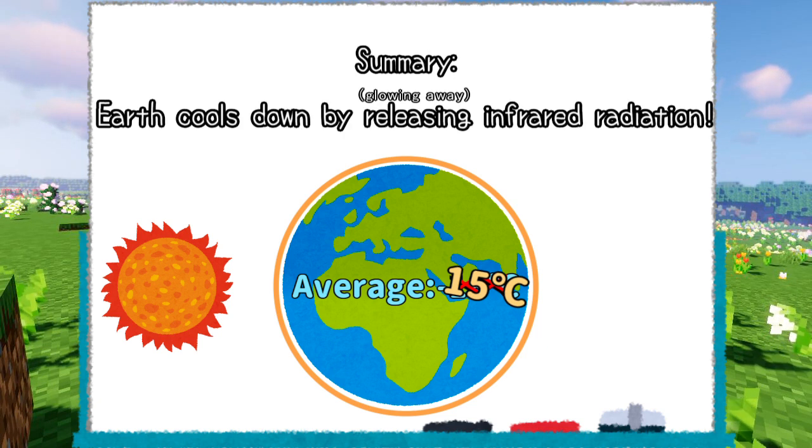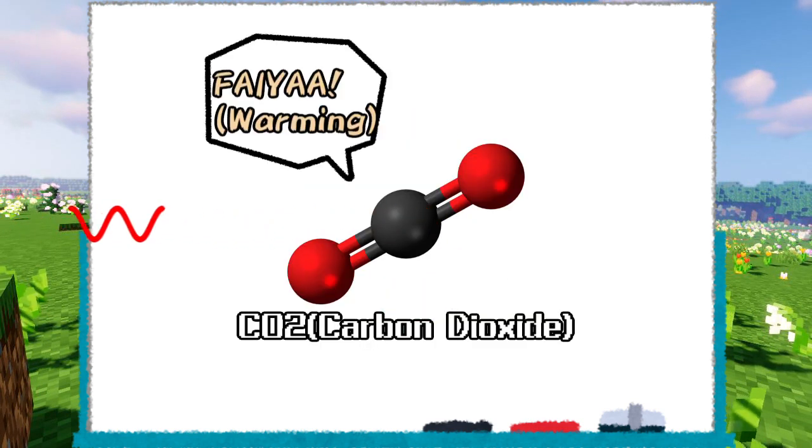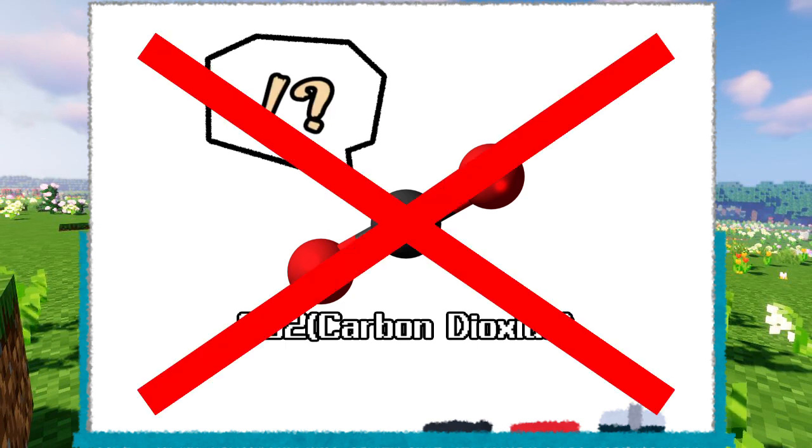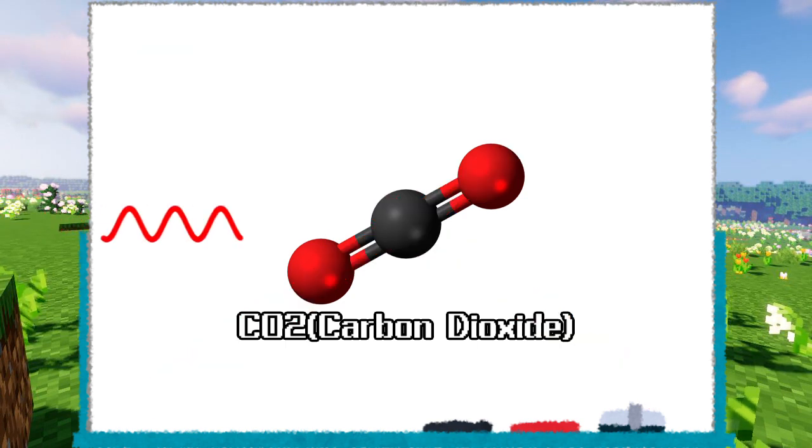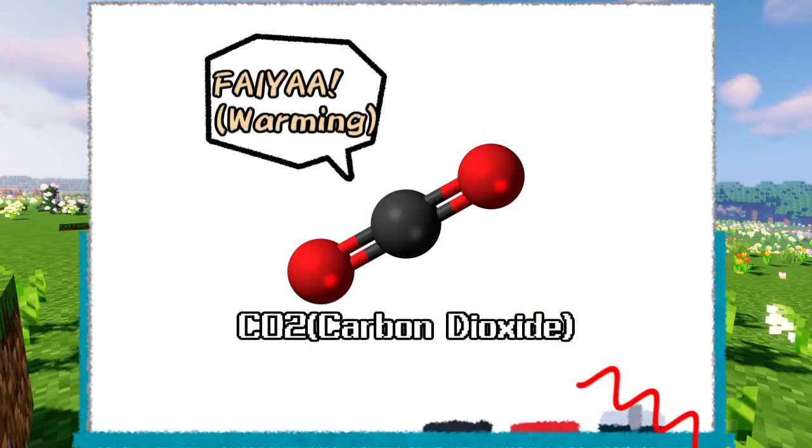That said, we will next move on to the greenhouse effect. Greenhouse gas reflects infrared radiation from Earth and prevents it from escaping, but that is a lie. Greenhouse gas actually absorbs infrared radiation and releases it in random directions.